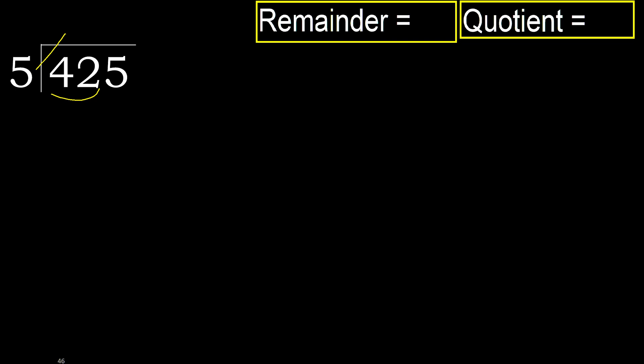5 multiplied by which number is nearest to 42, but not greater? 5 multiplied by 9 is 45, which is greater. Multiply by 8: 40 is not greater. 42 minus 40 is 2.